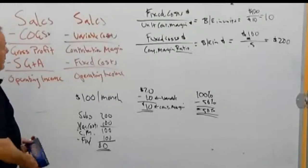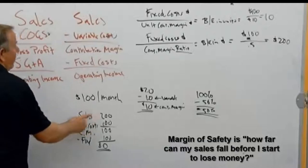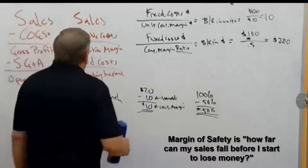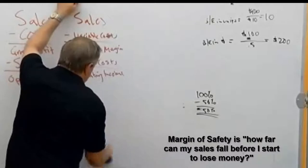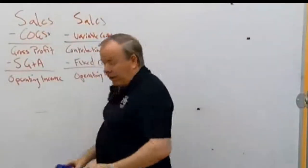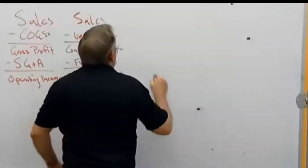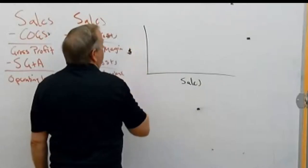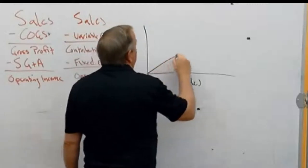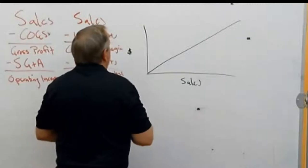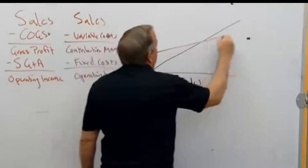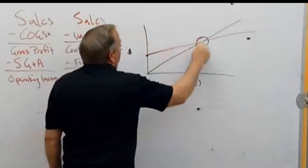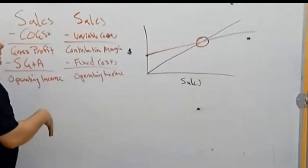The last concept is margin of safety. If sales are $300 and break-even is $200, the margin of safety is $100 — sales can fall $100 before we start losing money. In cost volume profit analysis we often draw a graph with sales on the horizontal axis and dollars on the vertical axis. Revenue increases with sales; your cost structure shows fixed costs as a baseline with variable costs added on top. Where revenue and total costs cross is your break-even point — in our wine shop, that's $200 in sales with zero operating income.